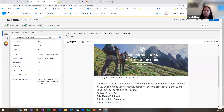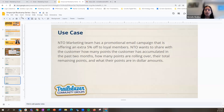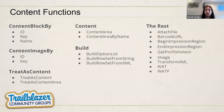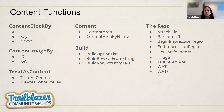Now let's jump back to our slides to go over content functions. There are lots of content functions — unfortunately we won't get through all of them in the interest of time, but we'll cover most of the commonly used ones, which are on the left-hand side: content block by ID, by key, or by name; content image by; and treat as content. Those are pretty commonly used compared to some of the other build functions.